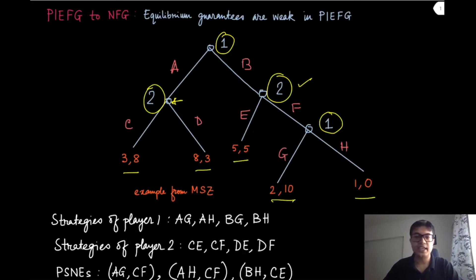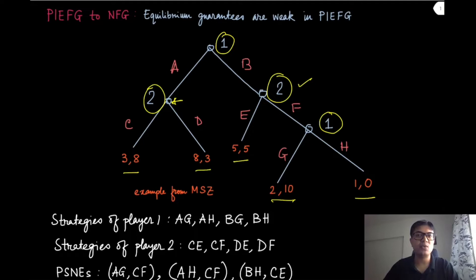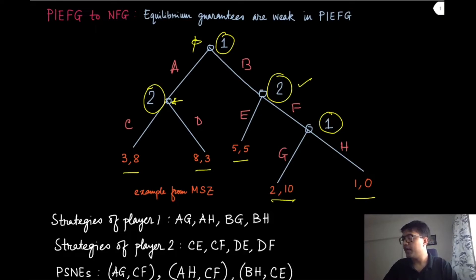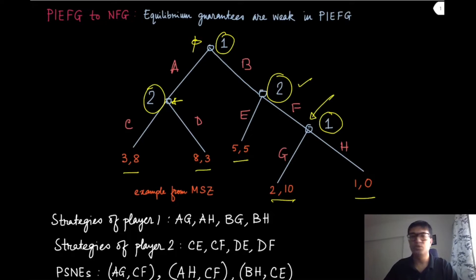What are the strategies, as we have defined in the previous module for the extensive form game? It is the complete contingency plan — what player one can do at every possible state of the game, every possible history of the game, every non-terminal history where that player is playing. Player one plays at the origin and also at this history which is BF. So at these two points it can take actions like A, G.